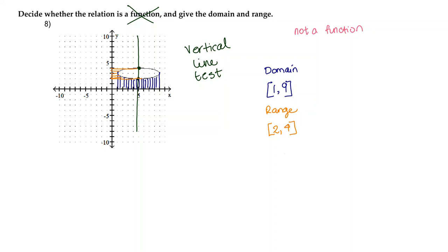The relation is not a function, and its domain is [1,9] with brackets and its range is [2,4] with brackets. We used the vertical line test to determine if it was a function and we moved from left to right to determine domain and from the bottom up to determine range.